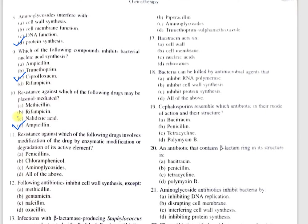Question number 11: Resistance against which of the following drugs involves modification of the drug by enzymatic modification or degradation of its active element? A, penicillins; B, chloramphenicols; C, aminoglycosides; D, all of the above. All options are correct, so the answer is option D, all of the above.